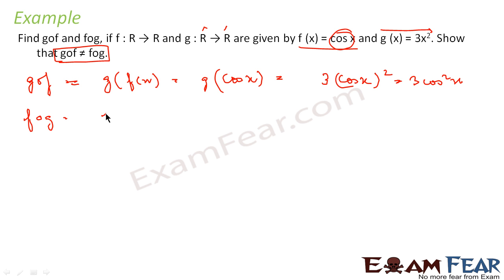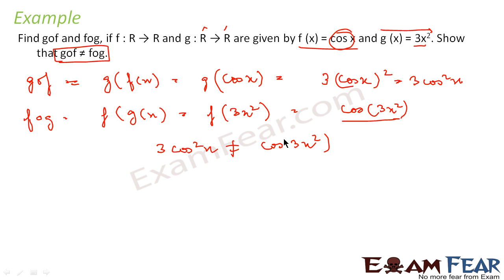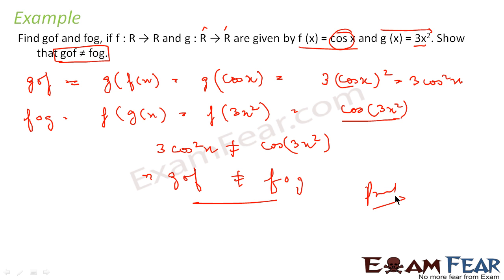If I want to find fog, that is f of g(x), the input is 3x². So f of 3x² is nothing but cos(3x²). So if you see, cos(3x²) and 3cos²x are both not the same. That means we can say that gof is not equal to fog, and that is true.